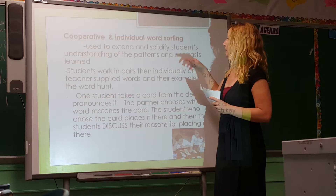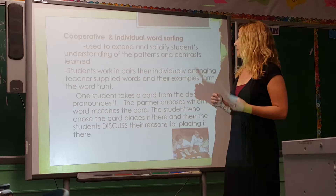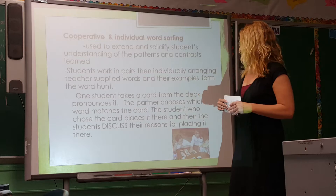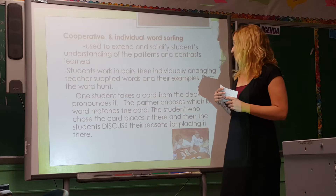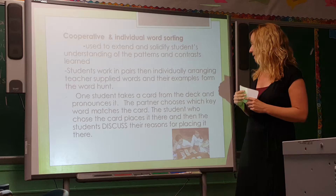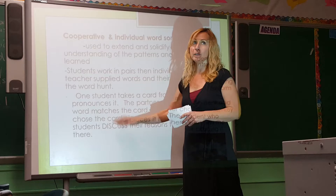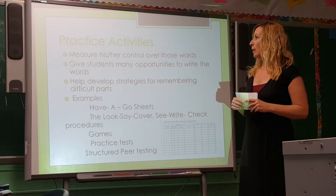Cooperative and individual word sorting is used to extend and solidify students' understanding of the patterns in contrast learning. Students work in pairs, then individually, arranging teacher-supplied words and their own examples. One student takes a card from the deck and pronounces it; the partner chooses which keyword matches the card. The student who chose the card places it in the correct column, and then the students discuss their reasons. Discussing is a big part of the word sort — it gives a reason for why words are placed in specific places.